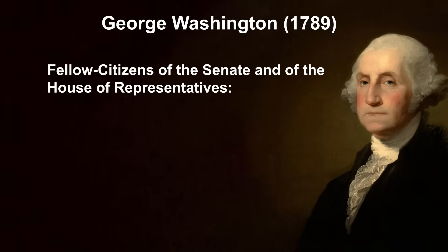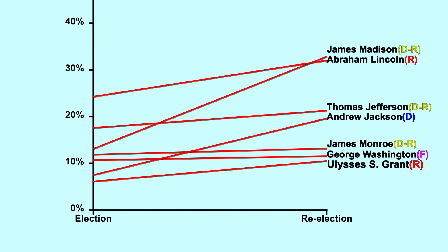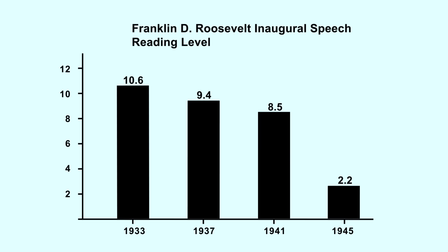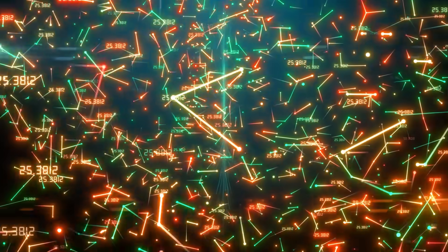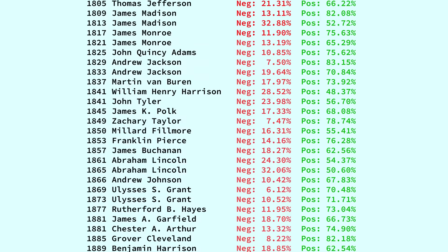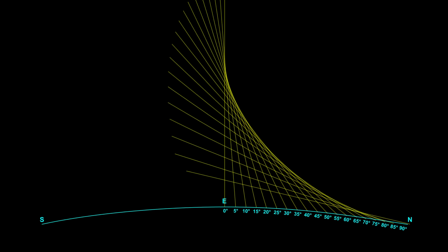In this video, we're going to be looking at inaugural speeches to see which are more positive and negative. We can plot these over time, contrast political parties, analyze re-election speeches, and we can even ask the AI to tell us what it thinks are the most positive and negative parts of both Trump and Biden's inaugural speeches. But enough talk — more data. It's data time!